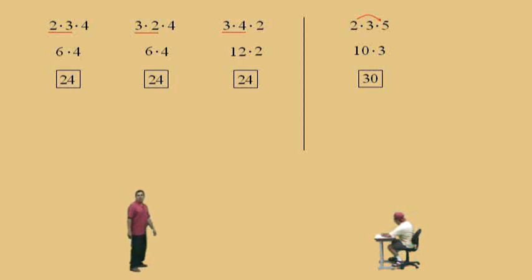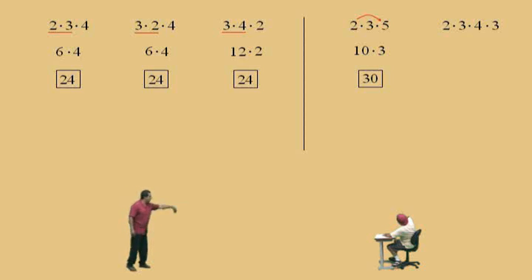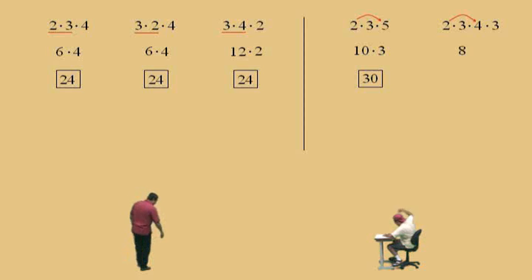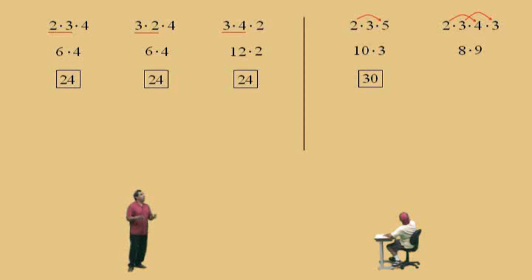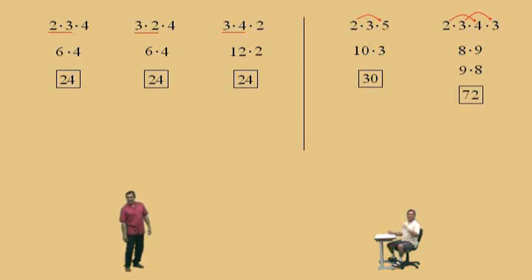Let's step it up. We have 2 times 3 times 4 times 3. Working left to right: 2 times 3 is 6... but we're going to bust out some kung-fu. Everything is being multiplied, so we'll go 2 times 4 is 8, and 3 times 3 is 9. Now 8 times 9 — some people know it right away, or apply the commutative property: 8 times 9 is the same as 9 times 8. What's 9 times 8? 72.